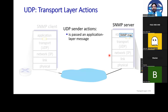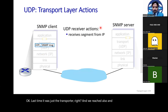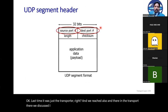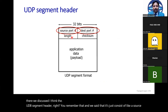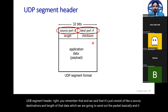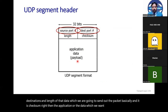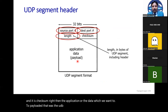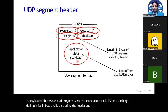Last time it was just the transport layer, and we reached the UDP segment header. We discussed that it consists of the source, destination, and length of the data we are going to send — the packet basically — and it is the checksum. Then the application data which we want to upload as payload. The length is in bytes, including the header.